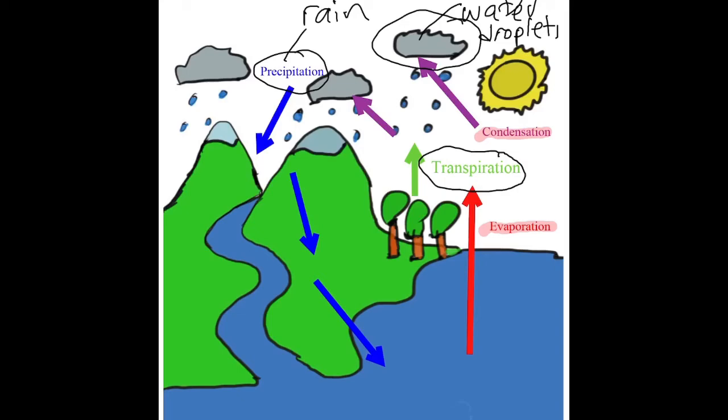The picture here shows the water cycle. Basically what happens is the water from the rivers and the seas will evaporate and change from water in the liquid state to water in the gaseous state, which is water vapor.